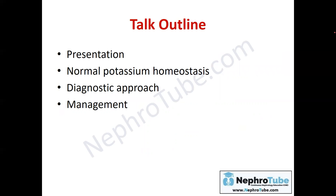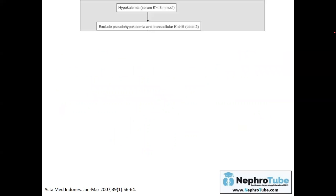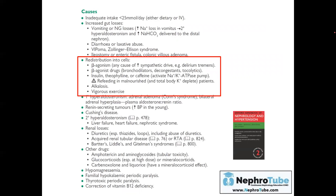Understanding normal potassium homeostasis makes the causes of hypokalemia clearer, as any cause will affect its normal homeostasis. Regarding the diagnostic approach: if you have a case of hypokalemia, you must first exclude transcellular potassium shift, which is mainly related to drugs. Many drugs we prescribe as nephrologists may cause redistribution of potassium through the sodium-potassium pump back into the cell. You must check the drug history carefully — for example, beta-agonists, insulin, theophylline, and caffeine may cause potassium redistribution.